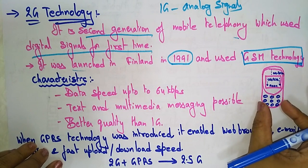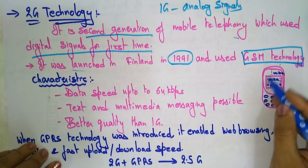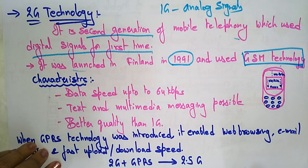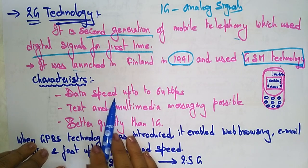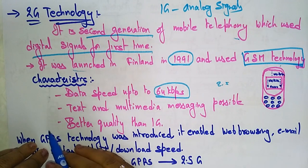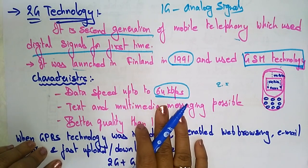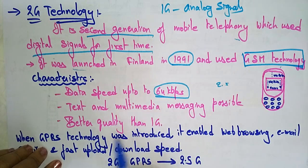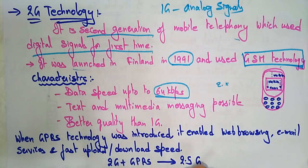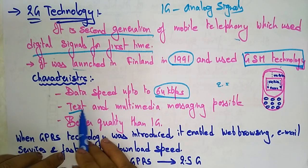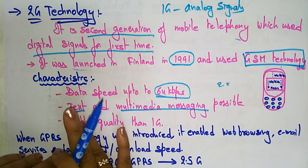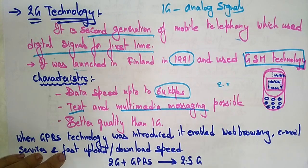The 2G mobile phones, like early Nokia phones, no longer had an external antenna — just a screen and a dial pad for numbers. The characteristics of second generation technology: data speed is up to 64 kilobits per second, increased from 2.4 kbps in 1G. Text and multimedia messages became possible, and data transfer could be either text or multimedia messages, with better quality than 1G.